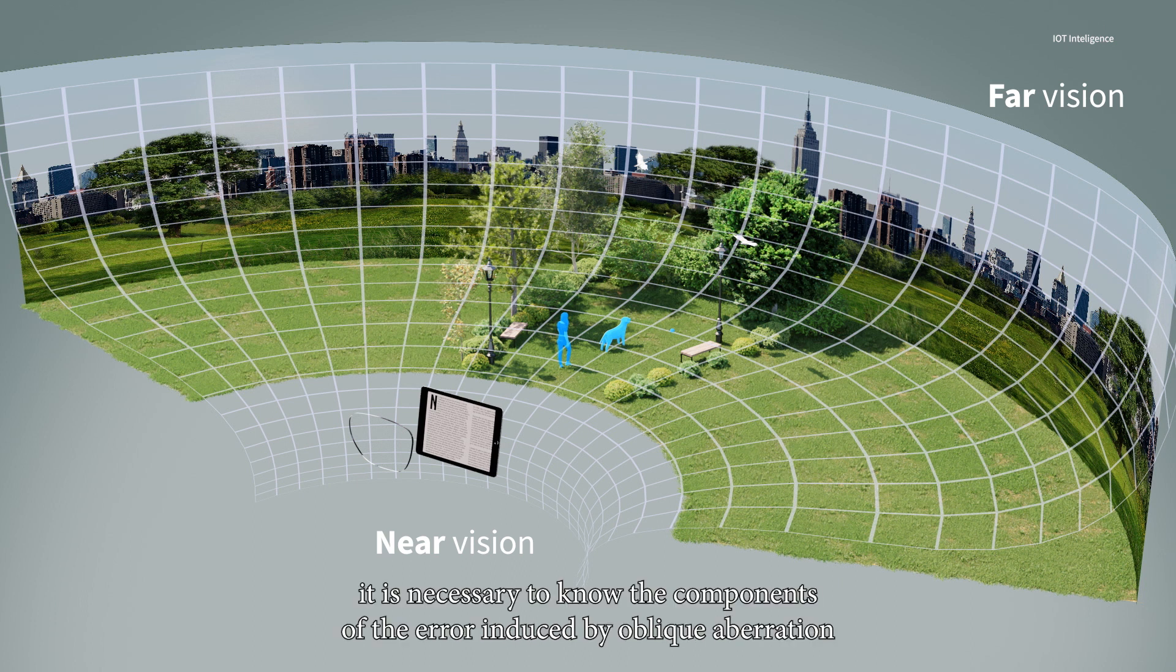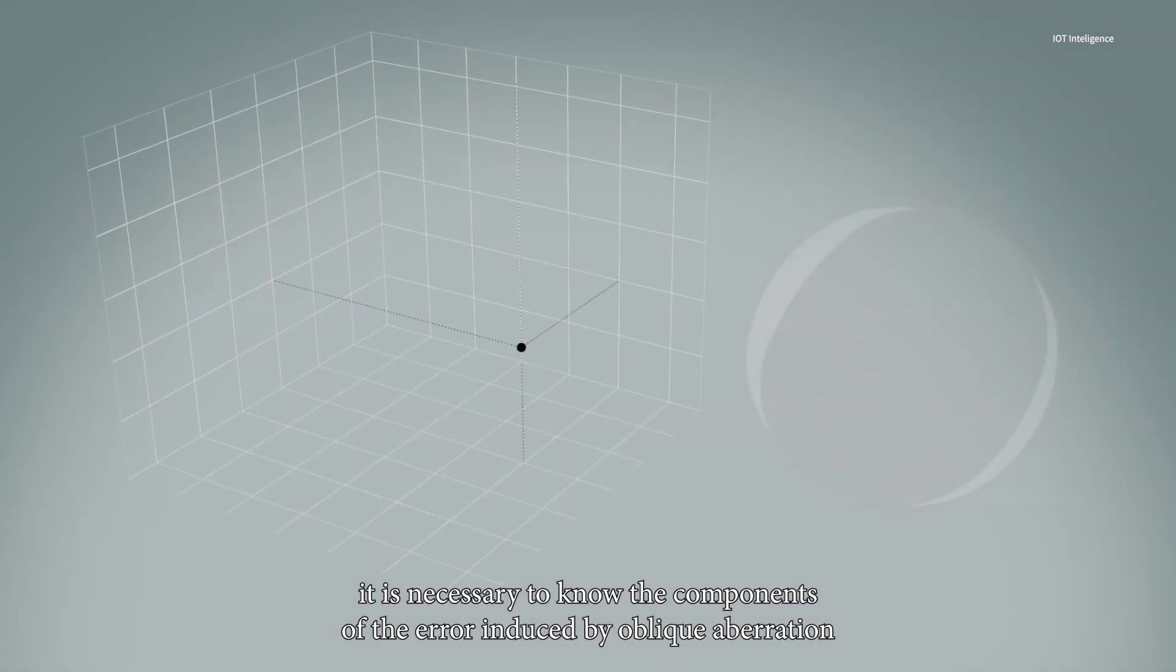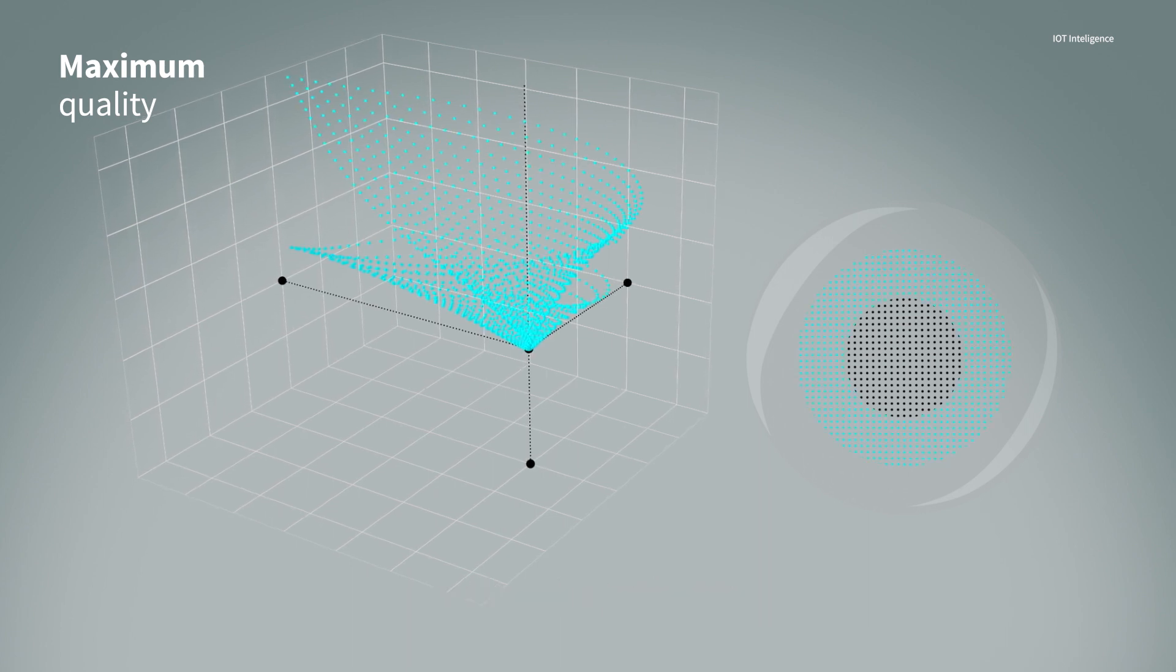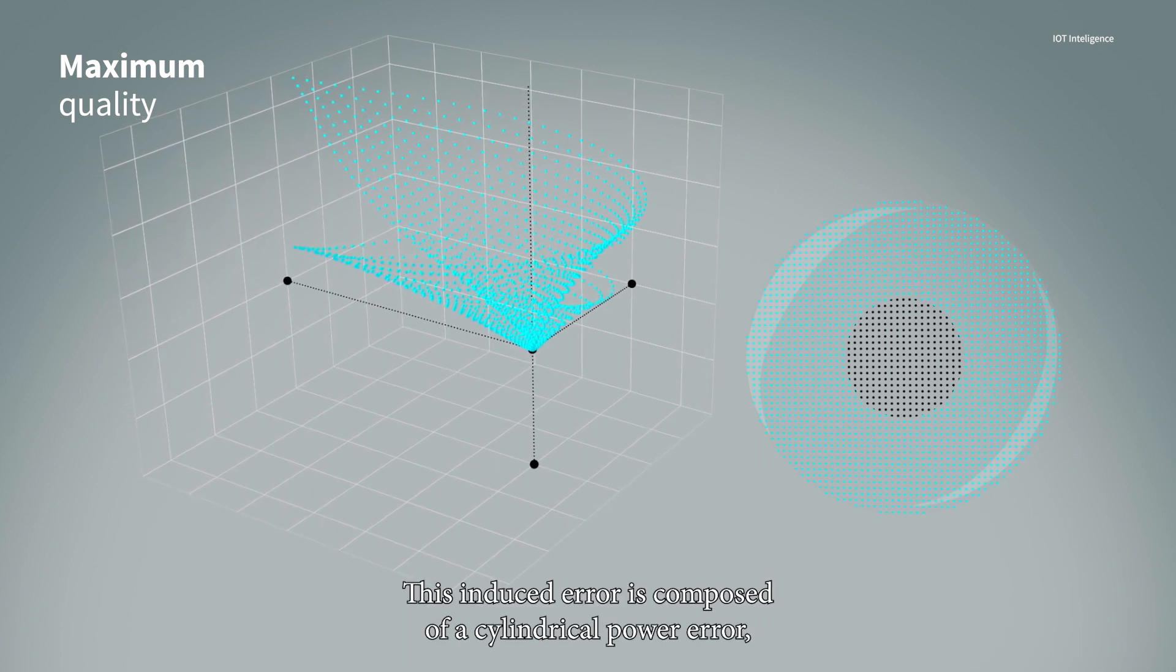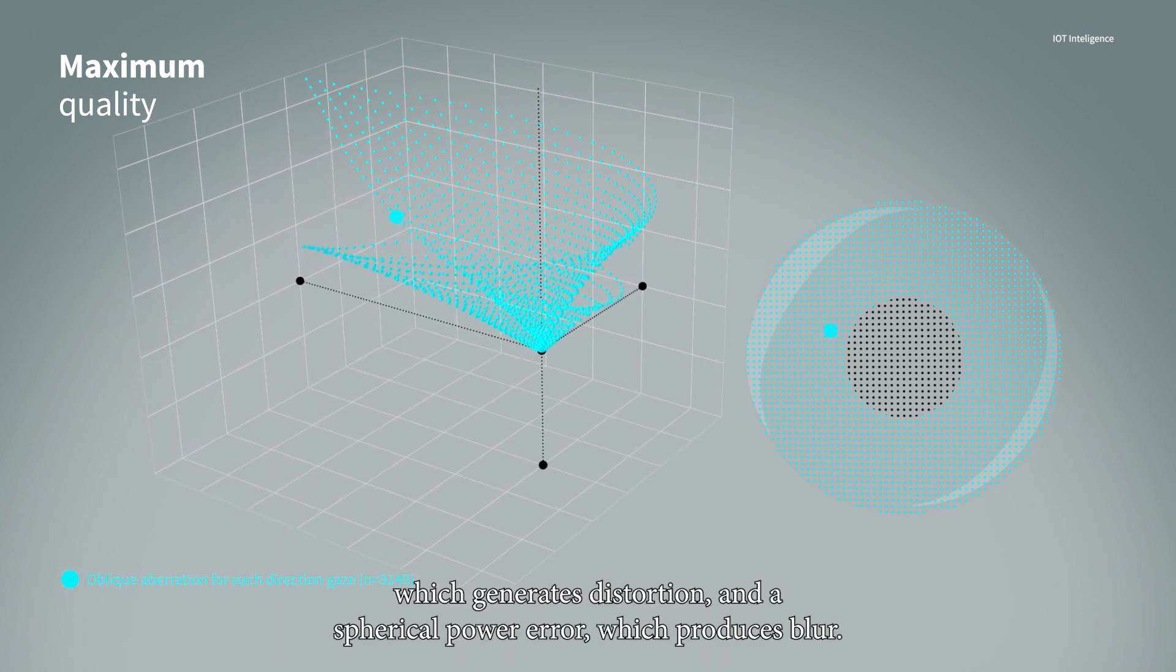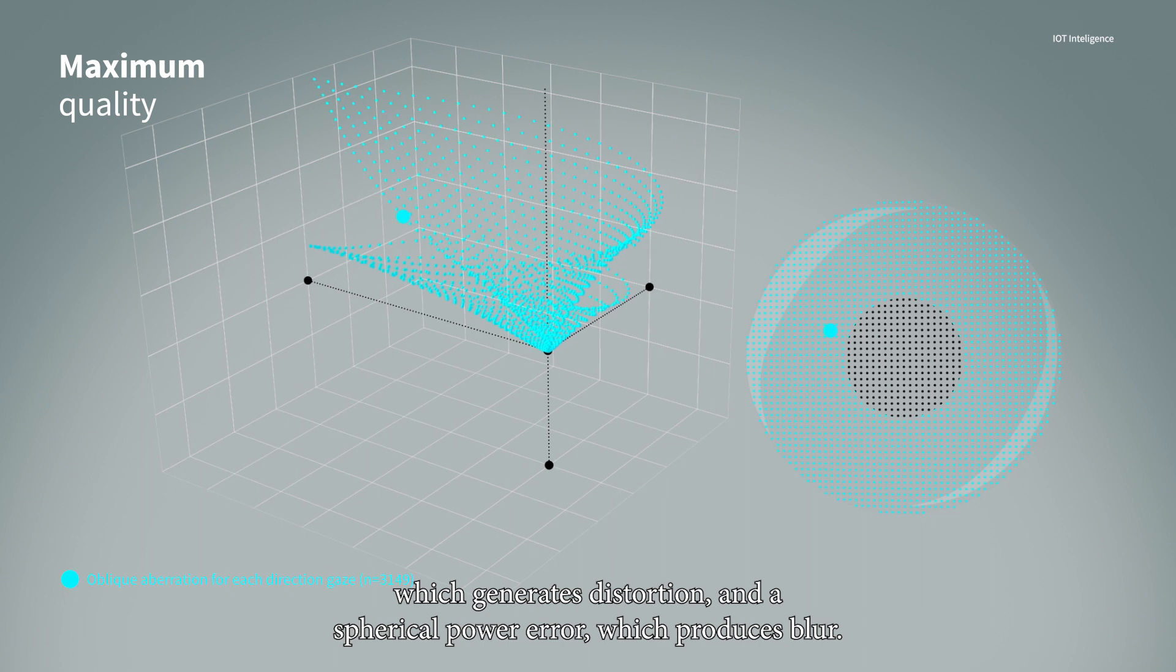To understand this, it is necessary to know the components of the error induced by oblique aberration and how the visual system perceives them. This induced error is composed of a cylindrical power error, which generates distortion, and a spherical power error, which produces blur.